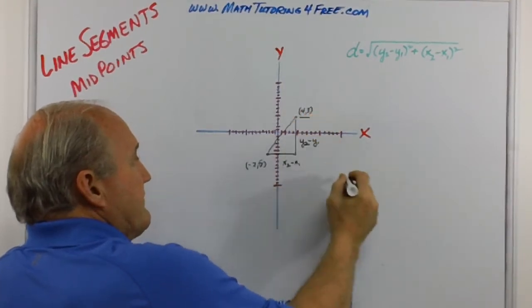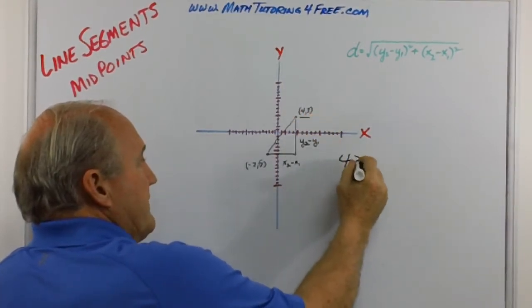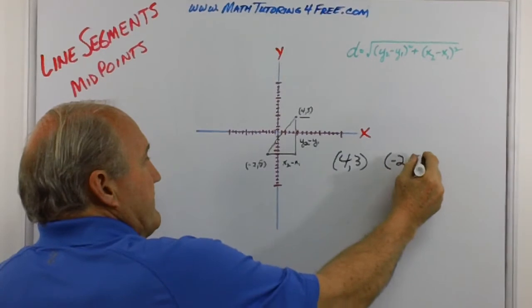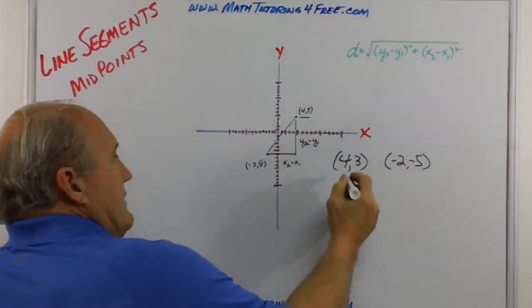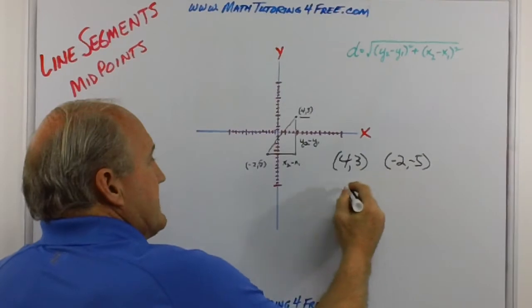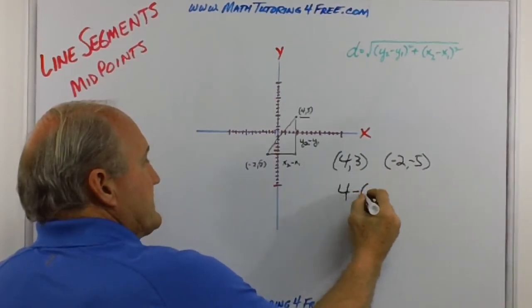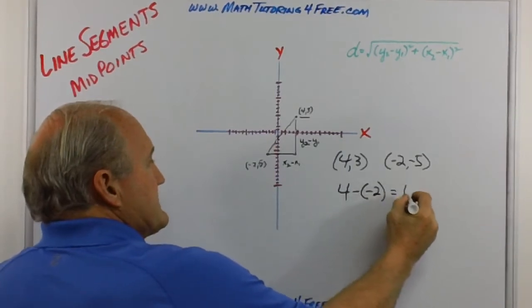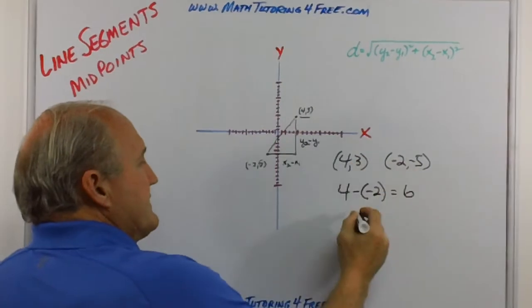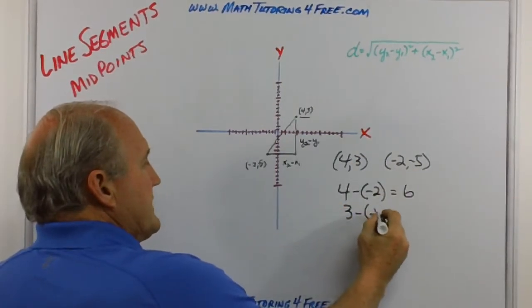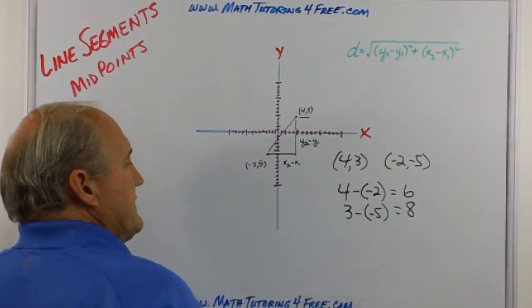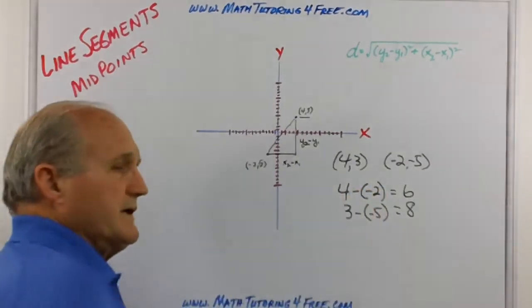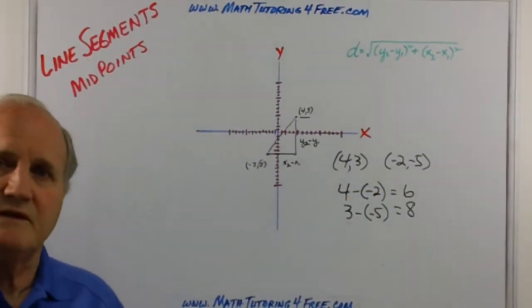Let's use these two points. We've got (4,3) is one point and the second point is (-2,-5). What's the difference in the x's? Well, you subtract one from the other, so we've got 4 minus (-2) which would be equal to 6. And the difference in the y's would be 3 minus (-5) which would be equal to 8. Now again, if we took them from the different direction, we'd end up with a -6 and a -8, but that doesn't really matter.